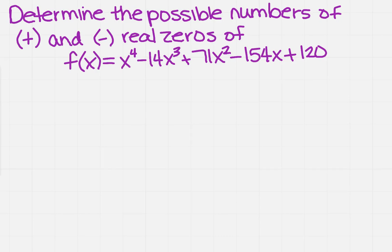We want to determine the possible numbers of positive and negative real zeros of the following function. If you remember from Descartes' rule of signs, we need to know what f of x is for positive real zeros, but we also need to know what f of negative x is to determine our negative real zeros.